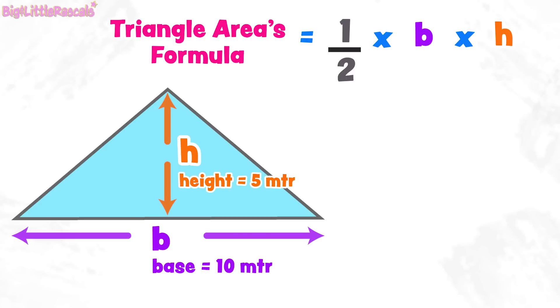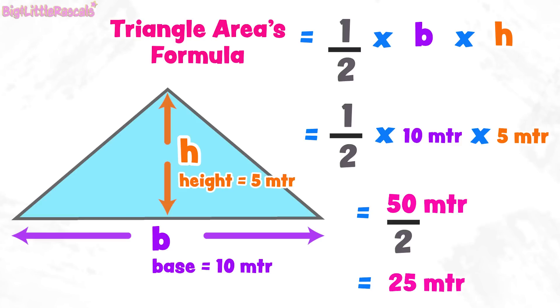So when we put this into formula, let's see. Triangle area equals to half multiplied by 10 meters, multiply by 5 meters. First, let's multiply 10 with 5, it becomes 50. Now 50 divided by 2, it equals to 25.